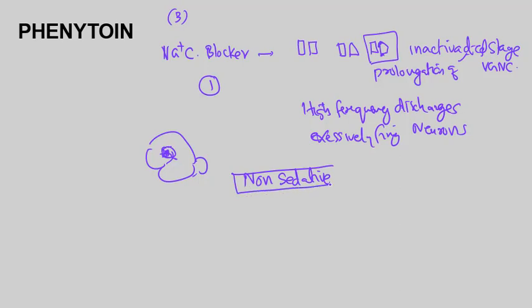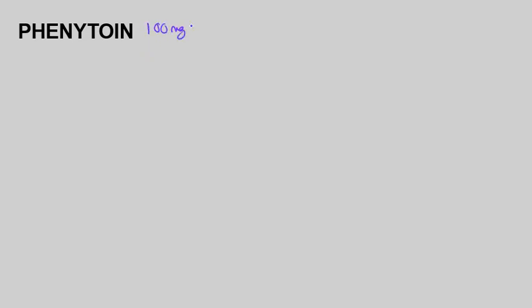Phenytoin has high popularity because other drugs such as barbiturates do suppress the CNS. It is not a CNS suppressant. Phenytoin brand names include Dilantin and Eptoin, and the typical dose is 100 mg TDS.